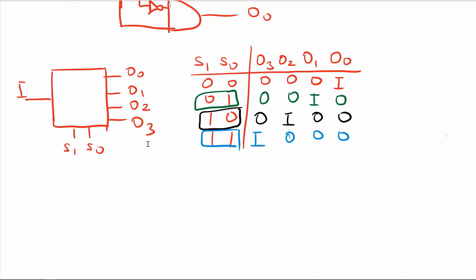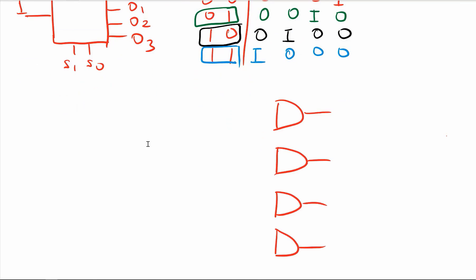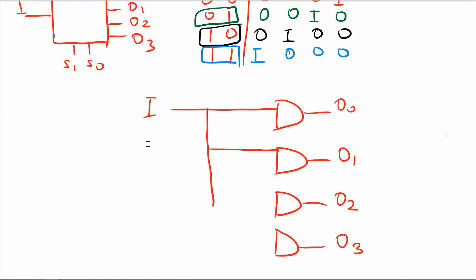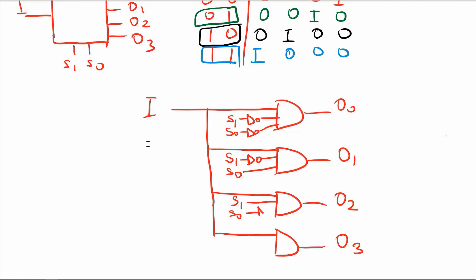I will directly draw the inside circuitry for this 1-to-4 D-multiplexer. We will have four AND gates for output 0, output 1, output 2, and output 3, and the I input goes to all of them. The select line combinations are: S1-not and S0-not for output 0, S1-not and S0 for output 1, S1 and S0-not for output 2, and S1 and S0 for output 3.